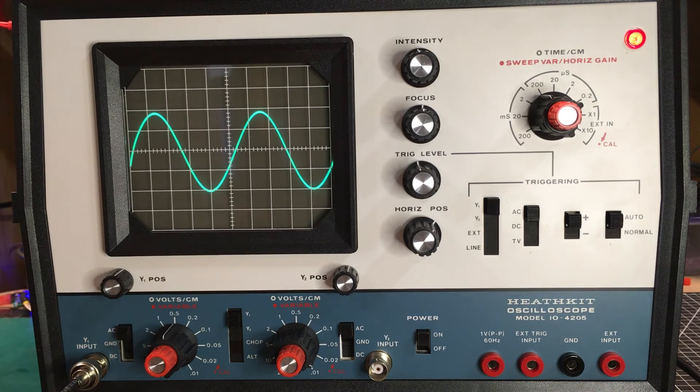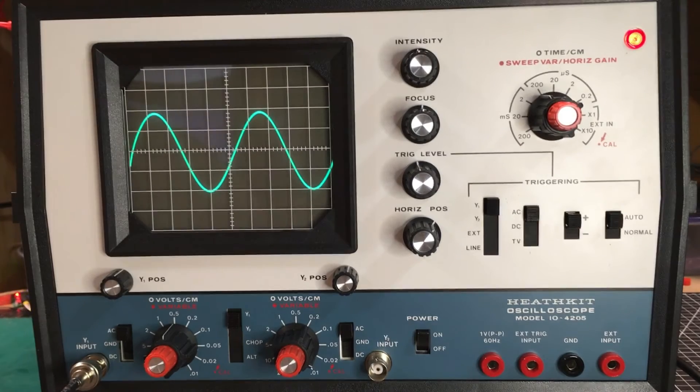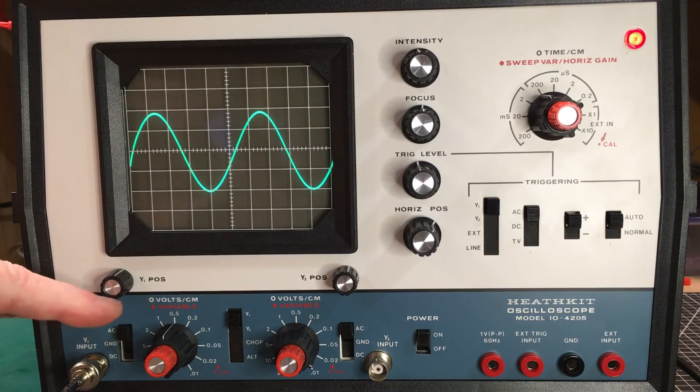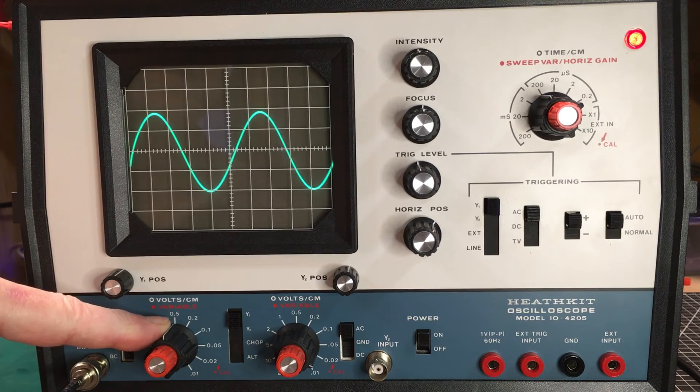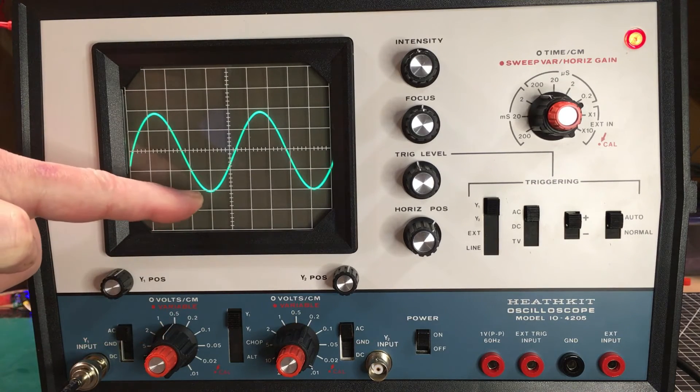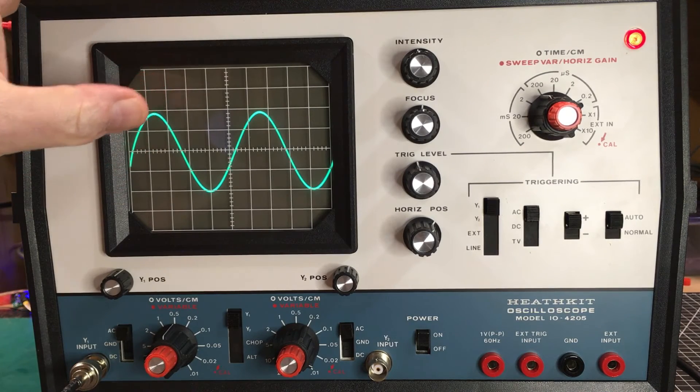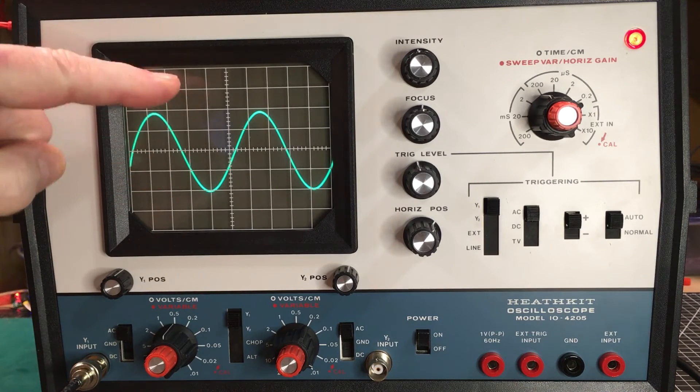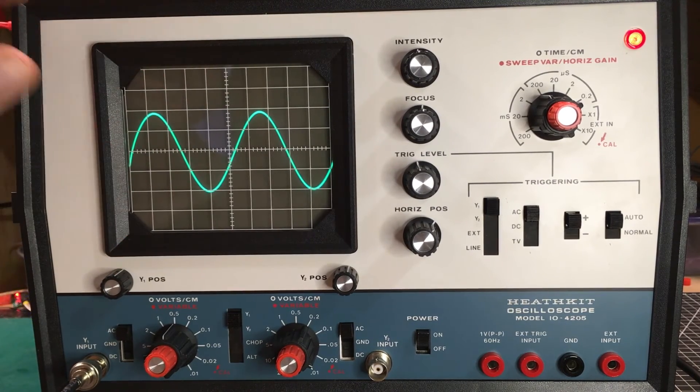So I've got this signal coming in. It's a one kilohertz signal, and it's at two volts peak to peak. Can we see that on the scope? Well, let's have a look. We have our vertical amplifier set up here for 0.5 volts per centimeter. If we look here from the bottom of the signal to the top of the signal, we've got one, two, three, four. So we've got four times 0.5 is two volts peak to peak. This is how you measure amplitude with the oscilloscope.